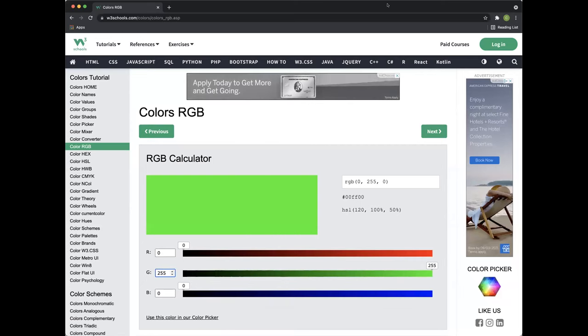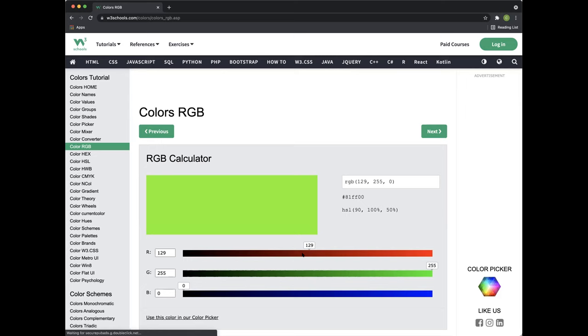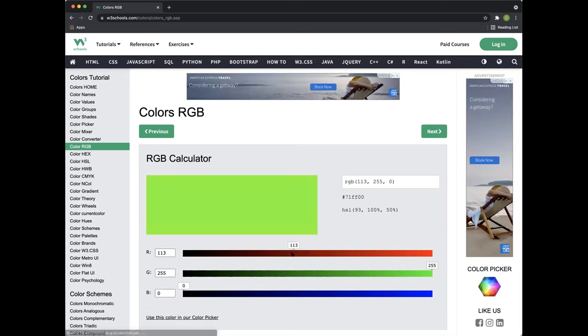There are a number of tools that are available online that you can use to play with and see how different colors can be picked. W3 schools does have an RGB color picker that will allow for you to determine different colors. So let's say if we want to set the R component to a value of 113.